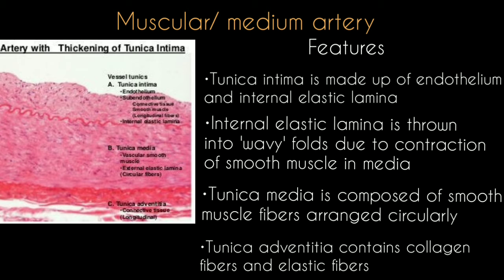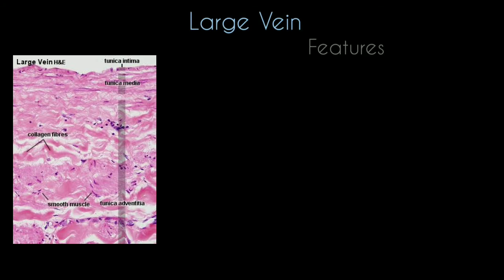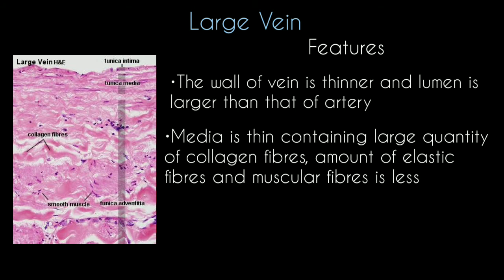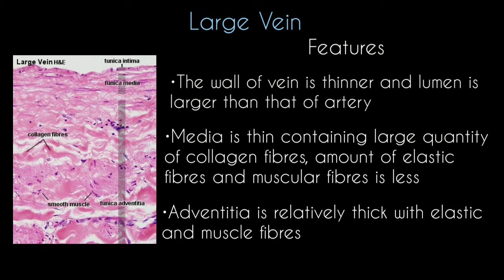The tunica adventitia of muscular arteries contains collagen fibers and few elastic fibers. In veins, the wall is thinner and the lumen is larger than that of an artery. The media is thin and contains a large quantity of collagen fibers, with less elastic or muscular fibers.